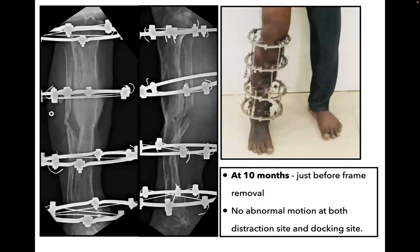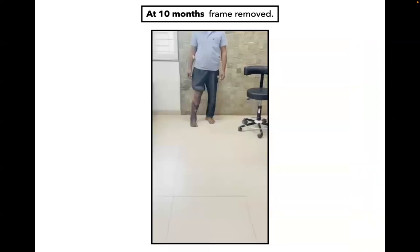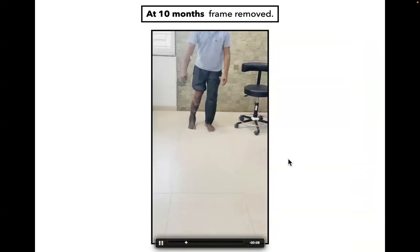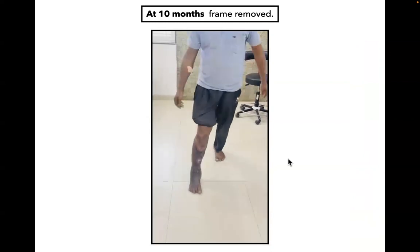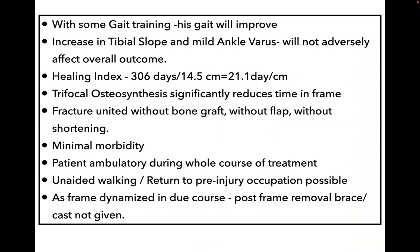At 10 months, this image is just before frame removal. Each rod between the rings was removed and the patient was able to walk with no abnormal motion at both distraction sites and the docking site. Post-frame removal, the clinical and radiological picture shows reasonably good alignment. There is some residual varus and increasing tibial slope, but that is within an acceptable range. As one can see, the very next day post-frame removal, with some physiotherapy, his gait will improve. Increasing tibial slope and mild ankle varus is not clinically significant and will not adversely affect the overall outcome.